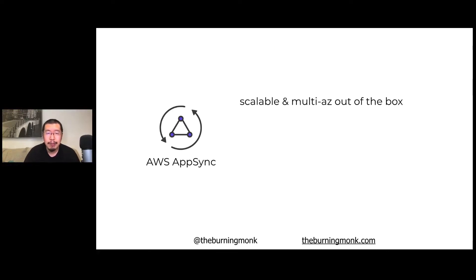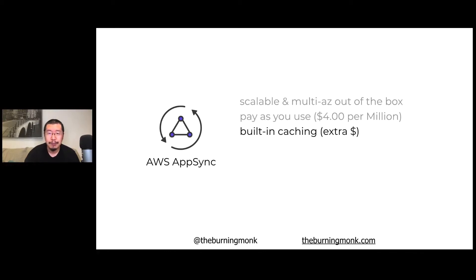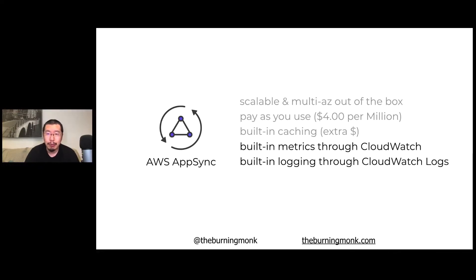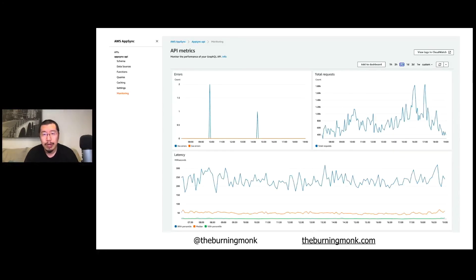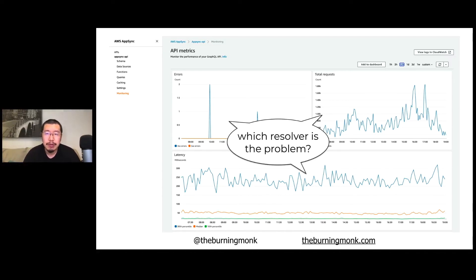AppSync itself is very scalable. The GraphQL subscription implementation, for example, can support millions of connected clients, and the AppSync API is deployed to multiple availability zones out of the box, giving you a great baseline for resilience. You only pay for what you use at about $4 per million operations. It's got built-in support for caching — though that charges you extra, essentially paying for uptime of a memcached node. It also has built-in monitoring with CloudWatch and CloudWatch Logs, giving you high-level metrics like number of API requests, error count, and latency. Unfortunately these are all aggregated, so it's difficult to tell which resolver is causing higher latency or more 4xx/5xx errors, since a single GraphQL request can involve many resolvers.